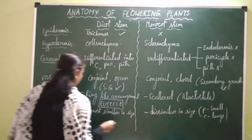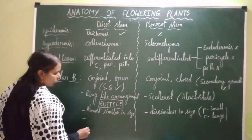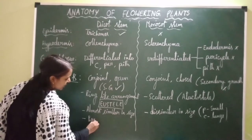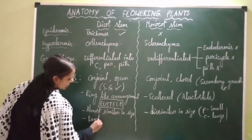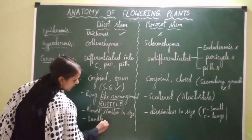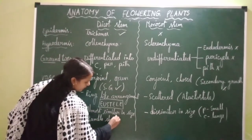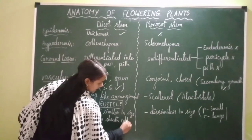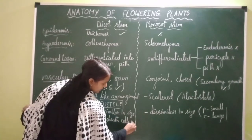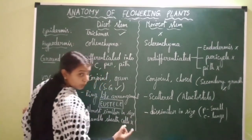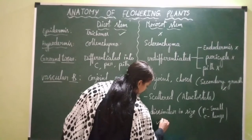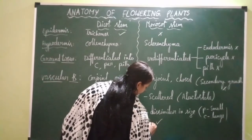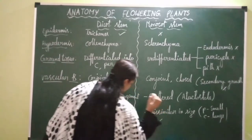In dicot stem, vascular bundles are not surrounded by bundle sheath cells — bundle sheath cells are absent. In case of monocot stem, bundle sheath cells are present.